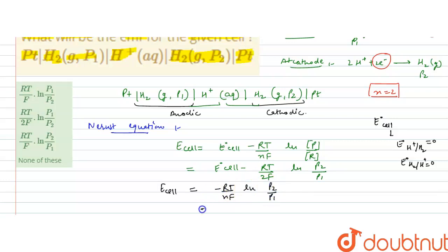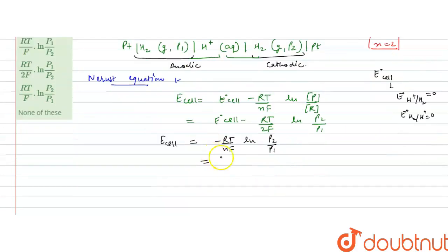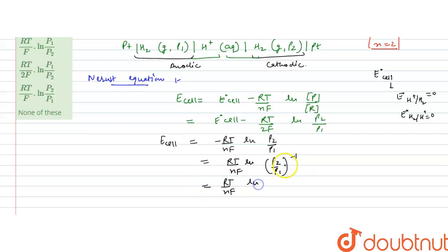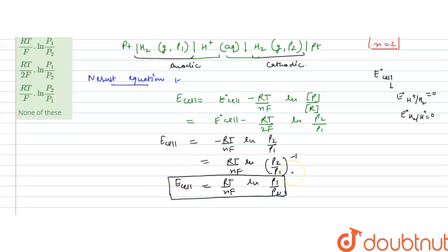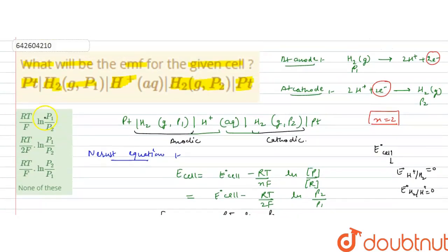Since E°_cell = 0, we get: E_cell = −(RT/2F) × ln(p2/p1). Taking the negative inside the logarithm as a power of −1 gives ln(p1/p2). Therefore, E_cell = (RT/2F) × ln(p1/p2). This is the EMF of the cell, and the correct answer is option B: RT/2F × ln(p1/p2). I hope you understood the solution.